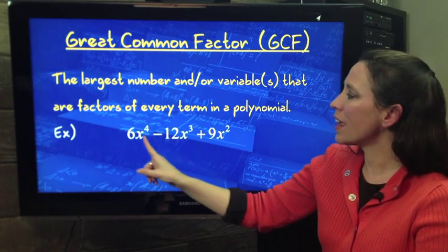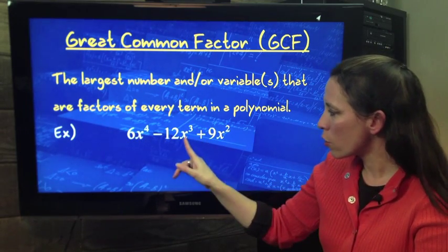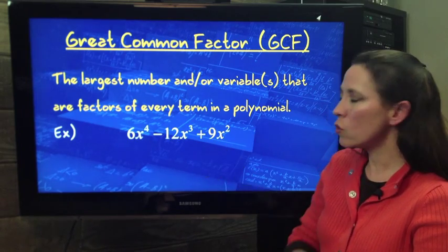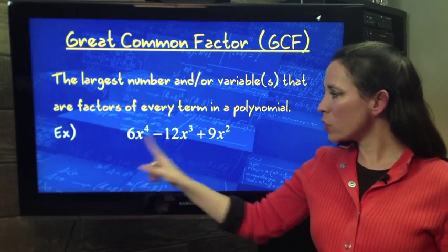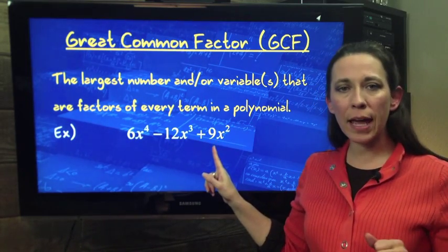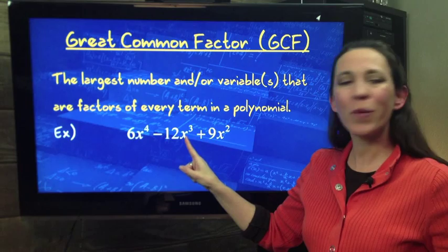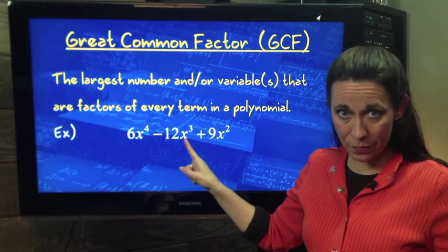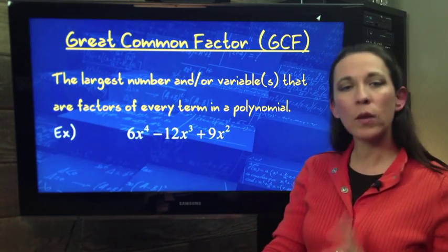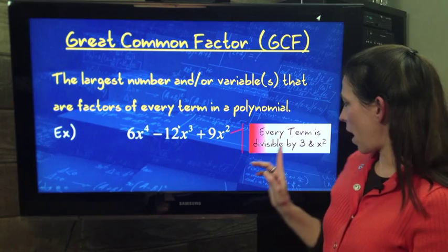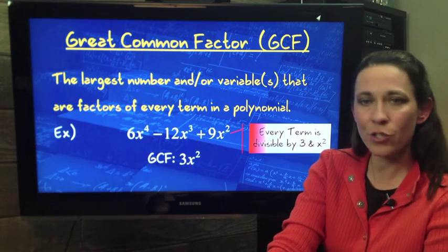And then we look at all the terms. They all have an X. There are 4 X's in the first one, 3 X's being multiplied in the second one, and 2 X's in the third one. So we want to know how many X's can we divide out from each term. We want as many as we can, but it has to be the same amount from all three. So the most X's that we can divide out of all three would be 2. So every term is divisible by 3 and X squared. Therefore, our GCF is 3X squared.